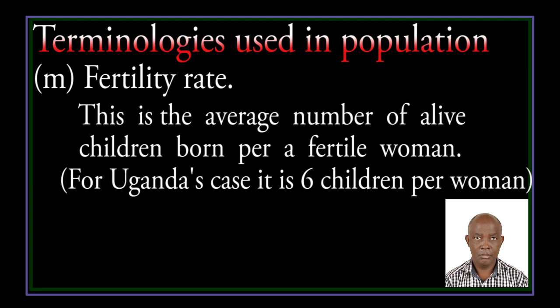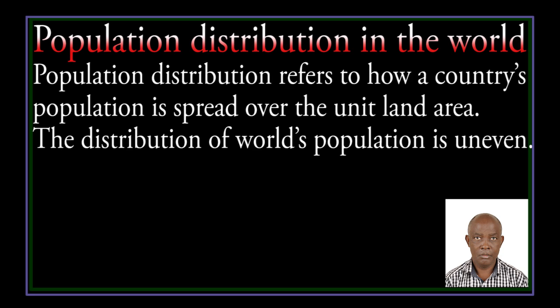Another population terminology is fertility rate: this is the average number of live children born per woman. In Uganda's case, it is 6 children per woman on average. Population distribution refers to how a country's population is spread over the total land area. The distribution of worldwide population is uneven.